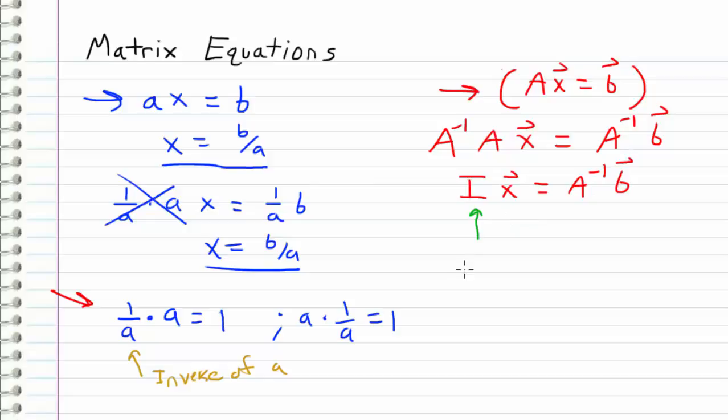So the equation becomes I or the identity matrix times x is equal to A inverse times b. So this identity matrix is like the one of matrix land. What it really is, is just ones along the main diagonal and zeros everywhere else. So if I were to multiply a matrix by I, if I have a random matrix, and I multiply it by I, what I get is that same matrix, just like if I were to take a number like a and multiply it by one, it would equal a. So that's why I call the identity matrix the one of matrix land.